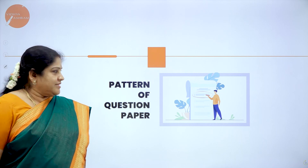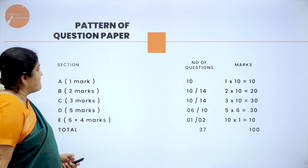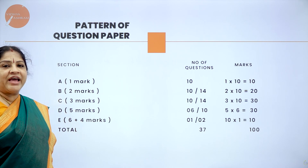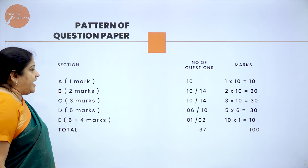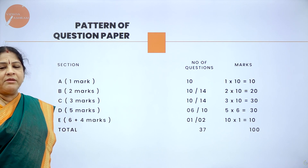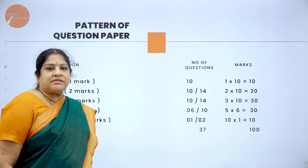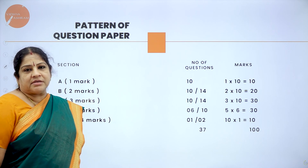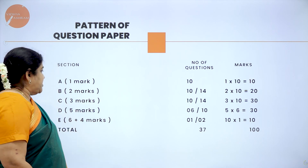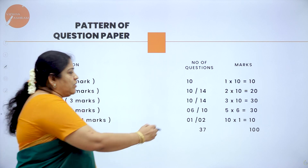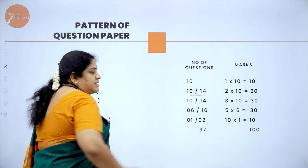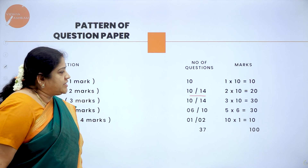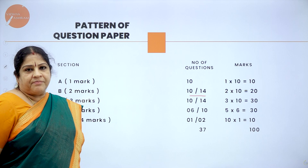Still, a recall on that. Totally, a question paper has 5 sections. Section A consists of 1 mark questions and there are totally 10 questions with no choices — you have to answer all 10 questions carrying 10 marks. Section B has 2 mark questions, where there are 14 questions out of which you have to answer any 10, giving 20 marks.